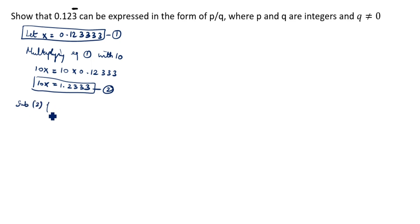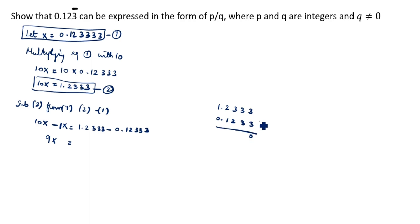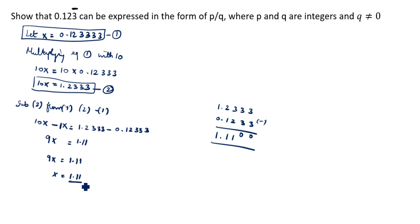Now subtract equation 1 from equation 2. The biggest number is 2, that is why we are subtracting 1 from 2. So 10x minus x equals 1.2333 minus 0.12333. That gives 9x. Subtracting: 1.2333 minus 0.12333 equals 1.11. So 9x equals 1.11.